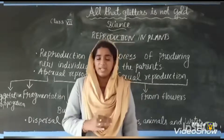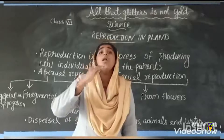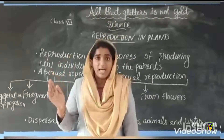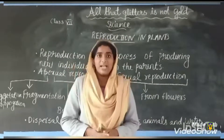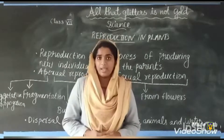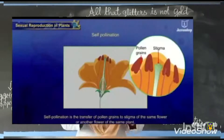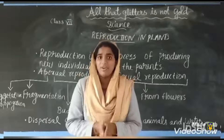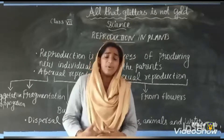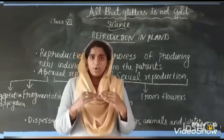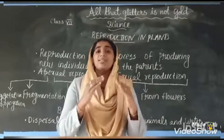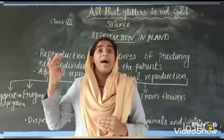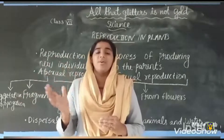In self-pollination, the pollen grains from the stamen are transferred to the stigma of the same flower. That is called self-pollination. In cross-pollination, pollen grains from the stamen are transferred to the stigma of another flower of the same kind. That is called cross-pollination.